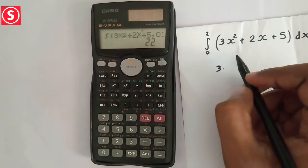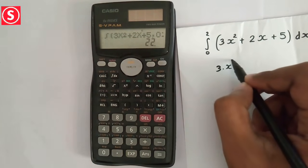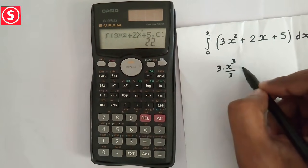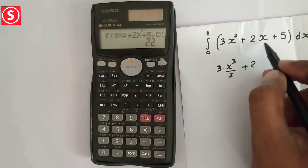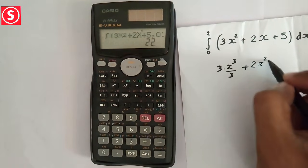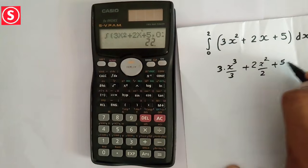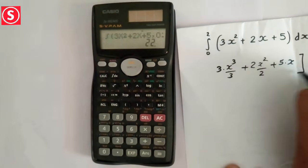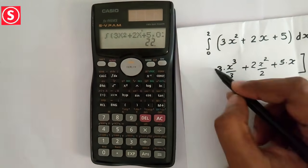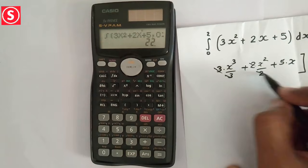For 3x², if you are integrating it will be x³/3. Plus 2x, if you are integrating, x²/2. Plus 5 into x. Limit is 0 to 2. So 3 and 3 will get cancelled, 2 and 2 will get cancelled.